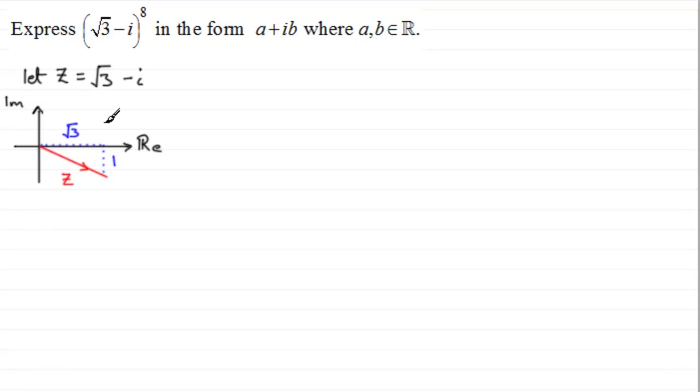So when it comes to working out the modulus of Z, the length of this line, it's just done by Pythagoras' theorem. So we've got then that the modulus of Z equals the square root then of root 3 squared plus 1 squared. In other words, we get 3 plus 1 is 4, root of 4 is 2. So there's the mod of Z.